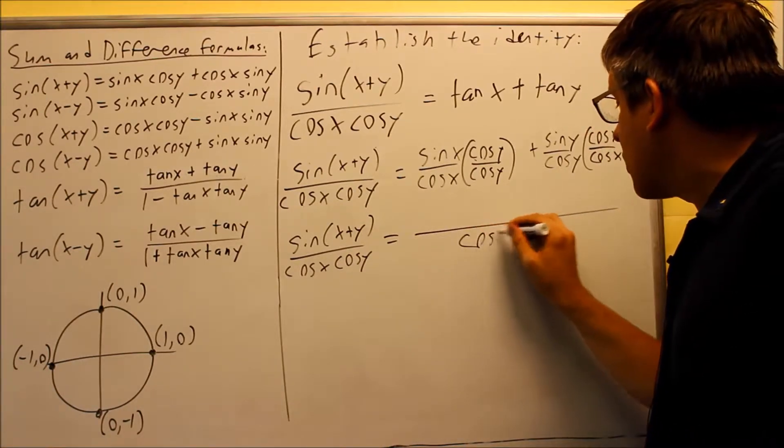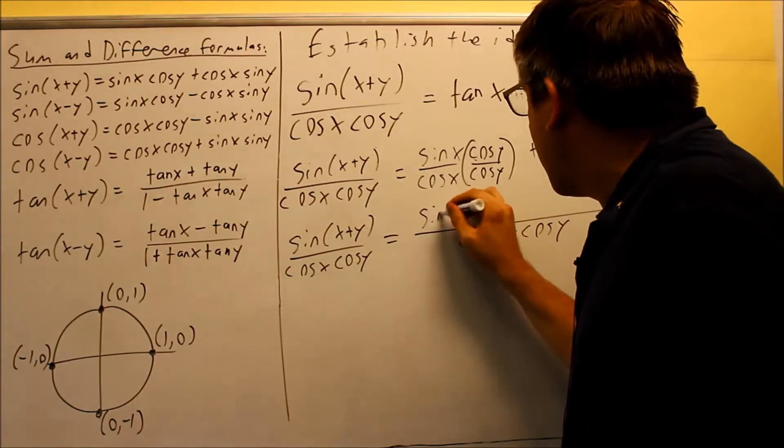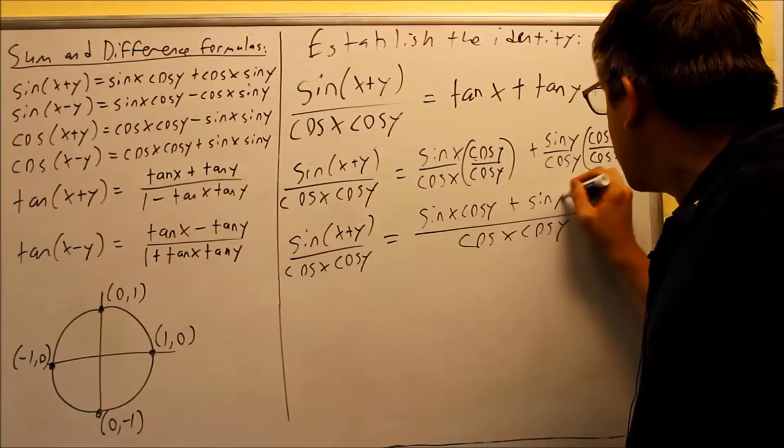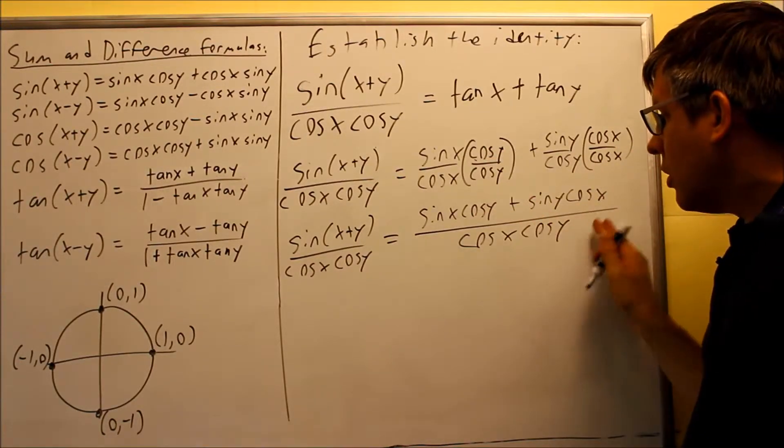Down here, I have cosine x, cosine y. And when I multiply the top part out, I get sine x, cosine y, plus sine y, cosine x. I'm just multiplying these together and putting it out there.